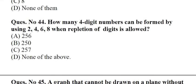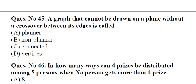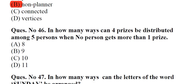Question number 44: How many 4-digit numbers can be formed by using 2, 4, 6, 8 when repetition of digits is allowed. A. 256, B. 250, C. 257, D. None of the above. Answer: A, 256. Question number 45: A graph that cannot be drawn on a plane without a crossover between its edges is called A. Planar, B. Non-planar, C. Connected, D. Vertices. Answer: B, Non-planar.